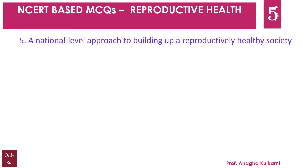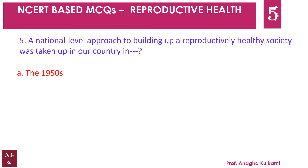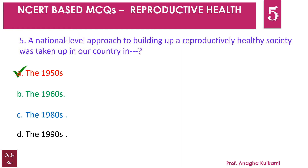Question number 5: A national level approach to building up a reproductively healthy society was taken up in our country in — A. the 1950s, B. the 1960s, C. the 1980s, D. the 1990s. The correct answer is A — the 1950s.